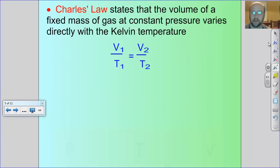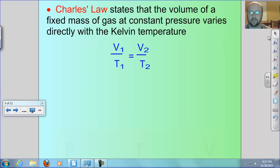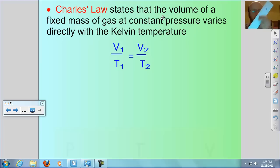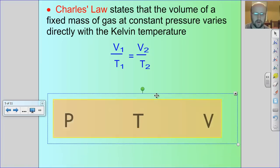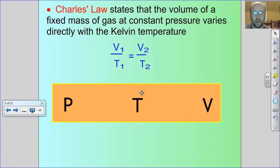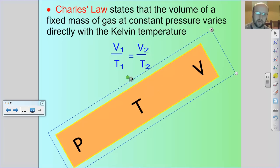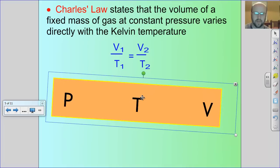The next law is Charles' Law, which states that the volume of a fixed mass of gas at constant pressure varies directly with the Kelvin temperature. That means volume and temperature increase together. If you grab your PTV tool and pressure is constant, temperature and volume go up together, or they go down together.